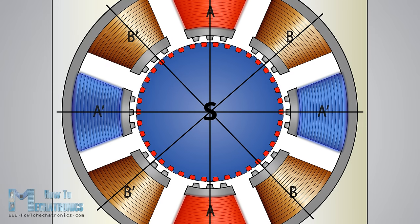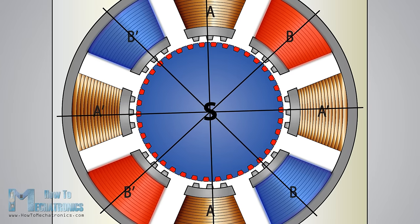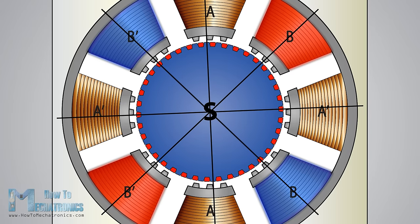We can see that in this way, the rotor's teeth are aligned with the teeth of the A poles and unaligned with the teeth of the B poles. This means that in the next step when we turn off the A poles and activate the B poles, the rotor will move counterclockwise and its teeth will align with the teeth of the B poles.